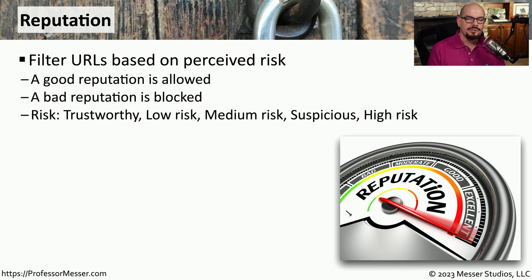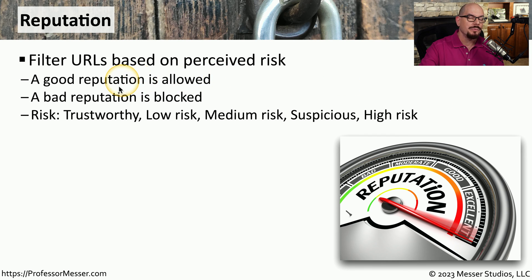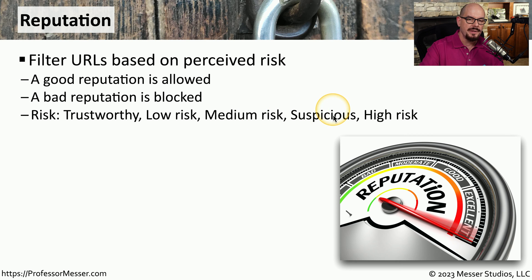Some content filters and URL filters look at more than just a fully qualified domain name. They might evaluate the reputation of that site and be able to allow or block based on the perceived risk of the data on that site. Websites with a good reputation would be allowed through, and anything with a bad reputation would be blocked. There are also different levels of reputation — it would not be unusual to see a URL filter with trustworthy, low risk, medium risk, suspicious, or high risk as categories you can associate with a website's reputation.